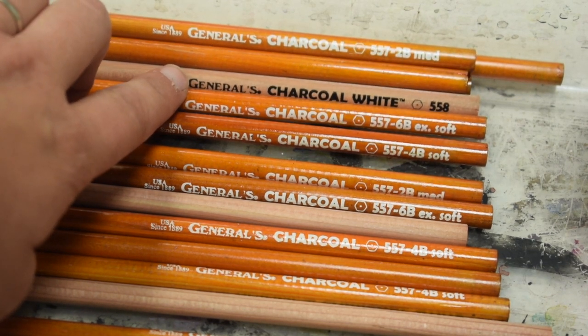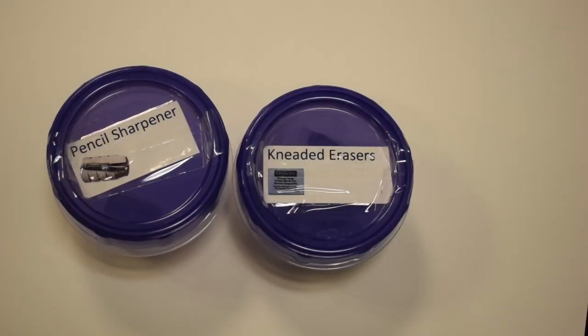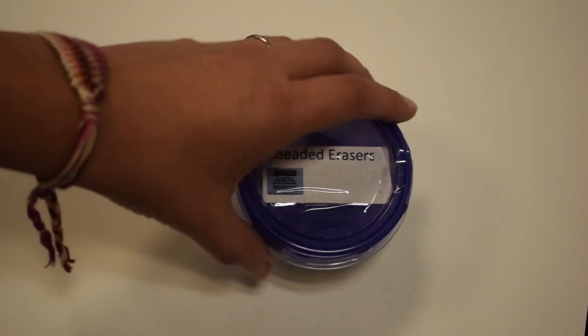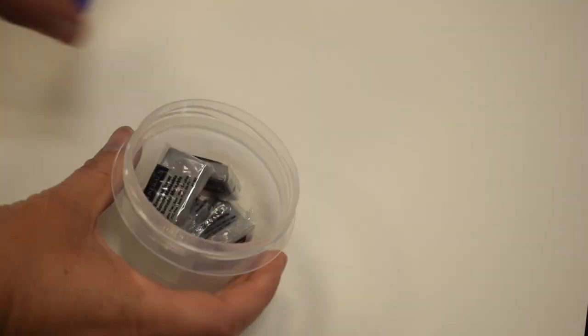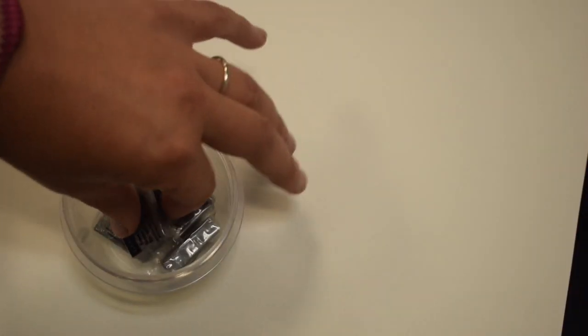Also in your box you're going to find two containers. One is for pencil sharpeners, the other one is for kneaded erasers. They do have to be kept separate and they do need to be stored in those containers just to keep them separated from all the charcoal dust.